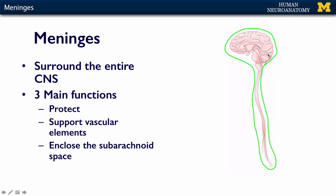They have three main functions. They protect the nervous system. They support the vascular elements — i.e. the blood vessels, the arteries and veins — and they enclose the subarachnoid space.